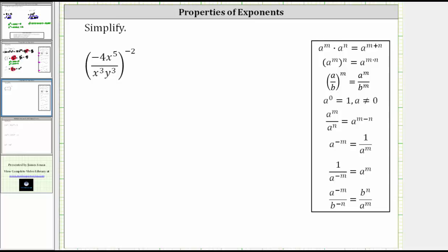We were asked to simplify the given expression. Let's first simplify inside the parentheses. Notice how we have x to the fifth in the numerator and x to the third in the denominator. Because we are dividing and the bases are the same, we subtract the exponents as shown by this property here.